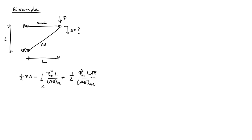In this particular case, I have the steel bar. There's the force in the steel bar — I'll call that PST. Its length is L, and it has its own cross-sectional area and modulus, so I'll just say AEST. The aluminum bar has its own force, PAL, and its length is root 2L, and it has its own modulus and cross-sectional area, so I'll call that AEAL.